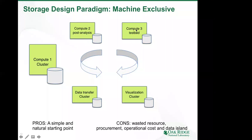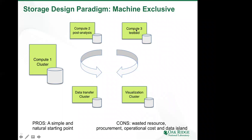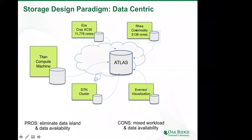Over time, many downsides of this pattern became apparent: wasted resources, procurement costs requiring specs and technology evaluation and acceptance testing for each system, extra operational costs requiring individual HPC operation teams, and maintaining a variety of hardware and software solutions. One of the biggest inconveniences for users is the so-called data island problem, where data generated on one system must be moved over if you want to analyze or visualize it on a different cluster. So over time, Oak Ridge made a paradigm shift to a so-called data-centric paradigm, consolidating all storage into a center-wide file system mounted on every cluster.